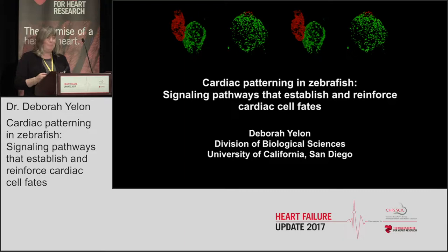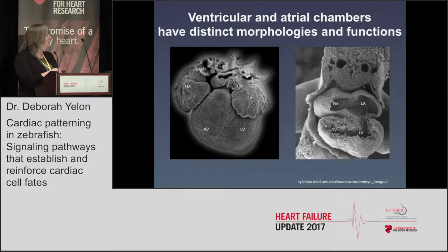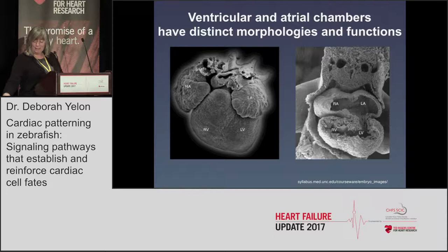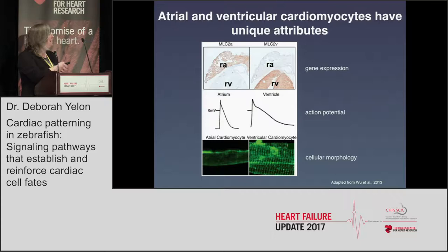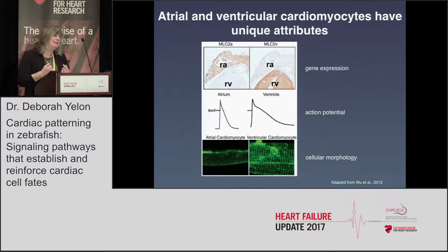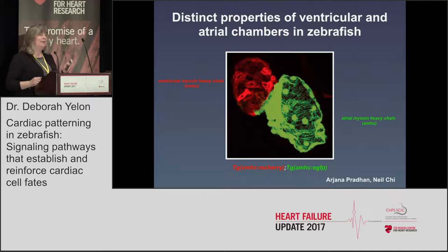In our lab we'd like to think about these questions of cellular identity in the context of the heart, and in particular today I'll focus on the question of how the ventricular myocardium becomes distinct from the atrial myocardium. These two kinds of myocardium, while they have a lot in common, it's readily apparent how distinct they are on a tissue level — you can see the difference in the thickness and the texture of the tissues.